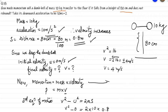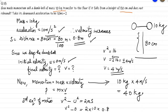Then we know momentum is equal to mass into velocity. We got the final velocity as 4 meter per second. So mass that is 10 kilogram into 4 meter per second, that is 40 kilogram meter per second is the momentum.